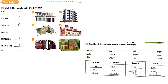Number three is 'cottage' — cottage is picture number six, so it goes third. Number four is 'police' — that goes here in fourth place. Number five is 'bungalow' — bungalow is picture number one, so it goes fifth. Number six is 'apartment' — apartment is picture number two, so it goes sixth.